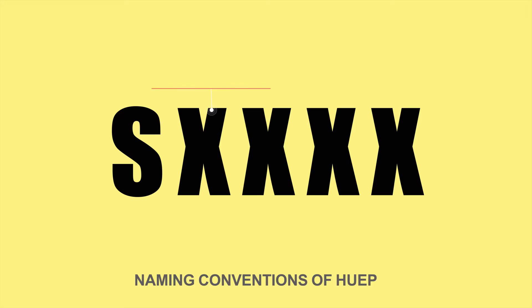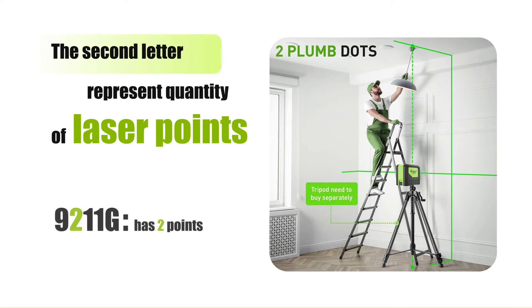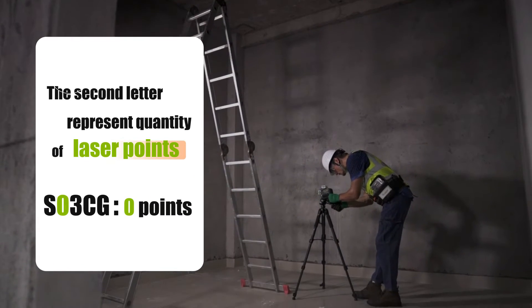The second letter represents quantity of laser points. For example, 9211G has two points. SO3CG doesn't have any points.